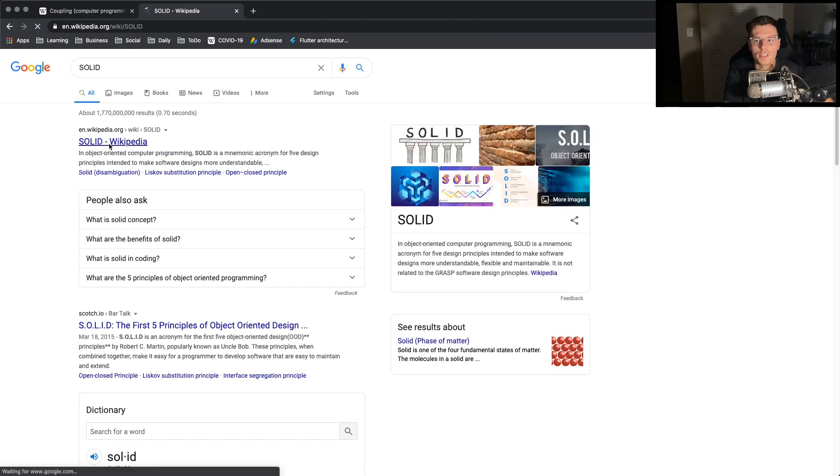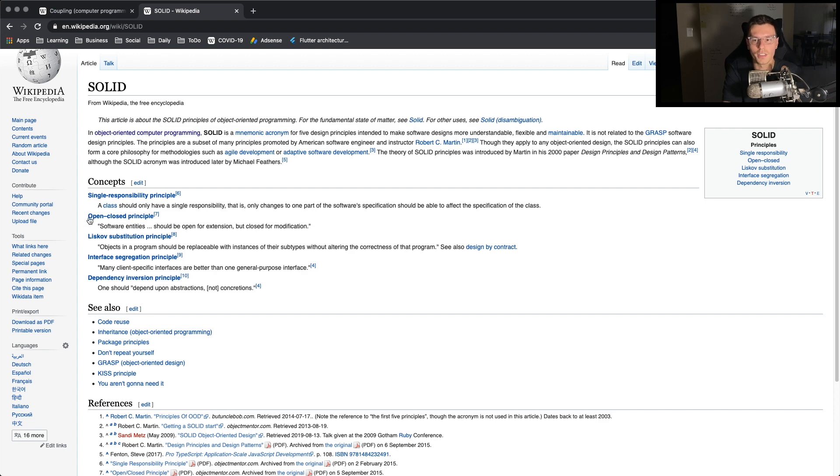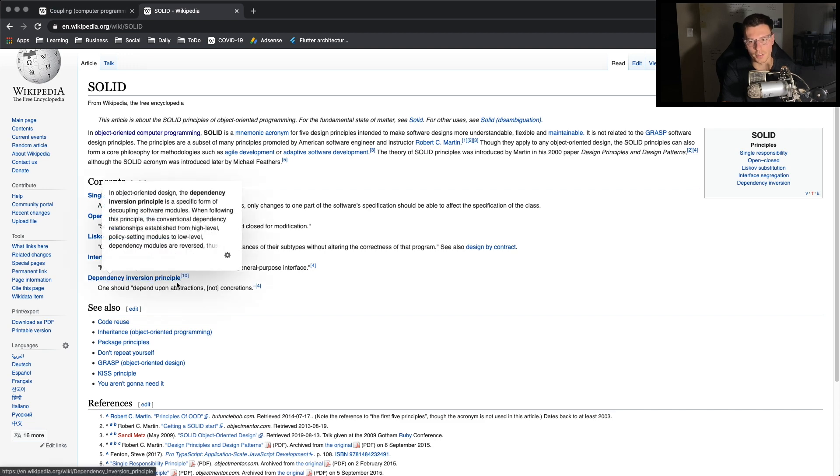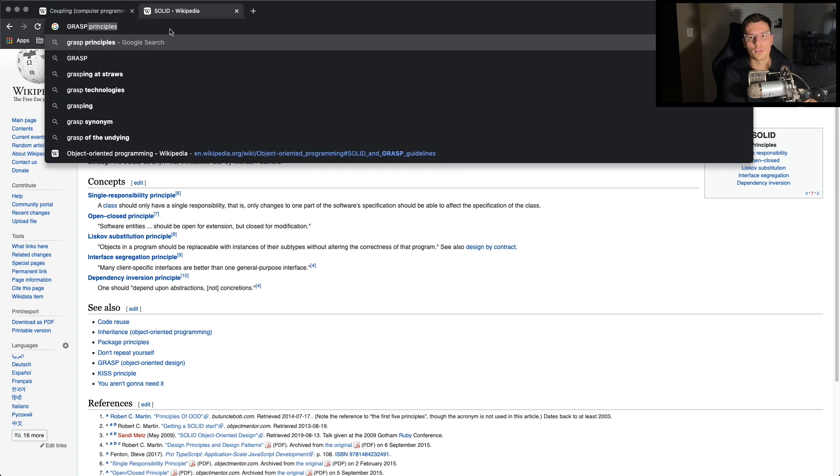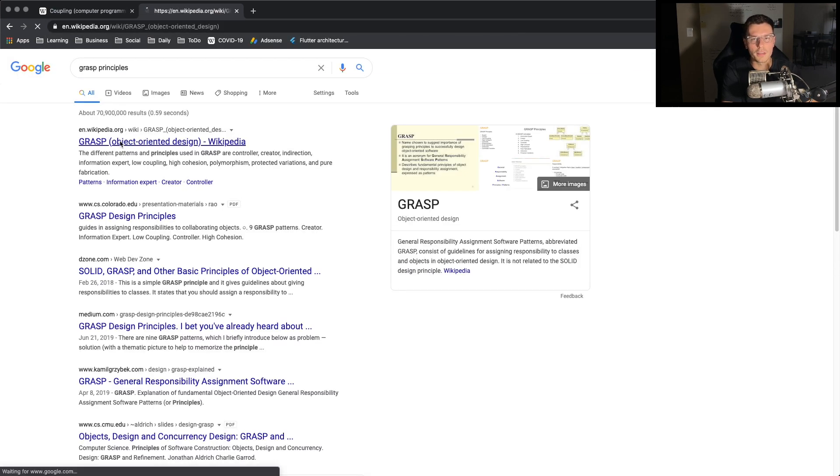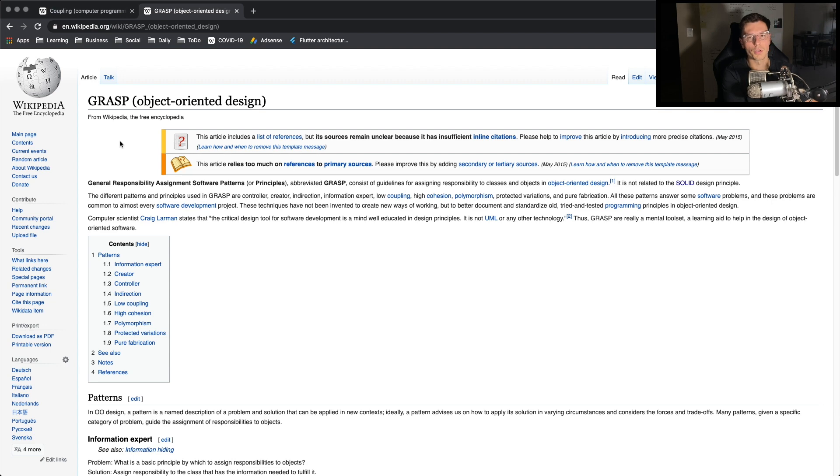First one is called SOLID. It stands for single responsibility, open close principle, Liskov substitution principle, interface segregation, dependency inversion. So this one as well as GRASP are the two main object oriented principle lists.